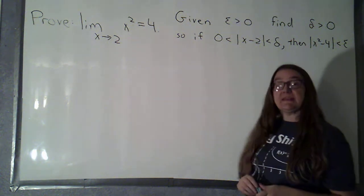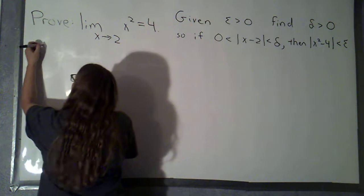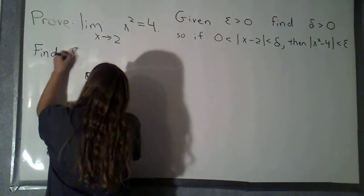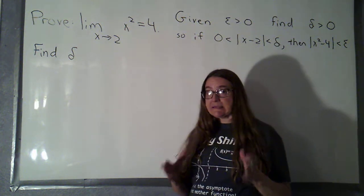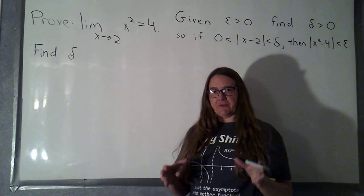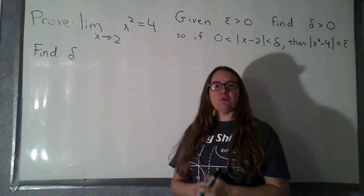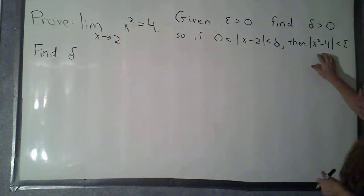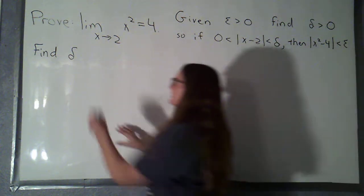As always, when we're using the epsilon-delta definition, it's going to be a two-step process. I'm going to first need to do some informal work to find what my delta is. Once I've found it, I can do a formal proof to demonstrate that that value of delta will work. In finding delta, I usually start where I'm not allowed to start in the formal proof — with my conclusion.